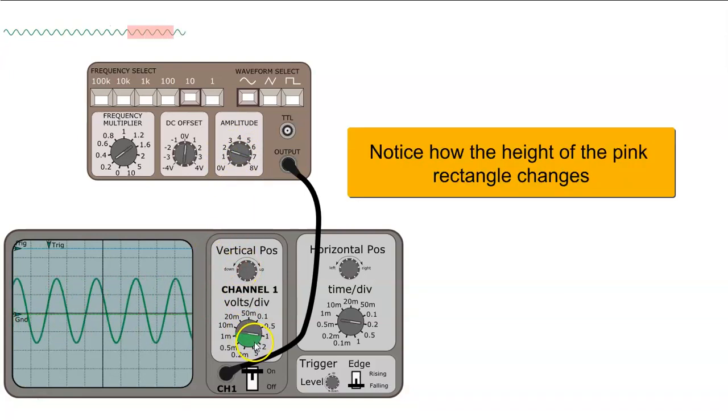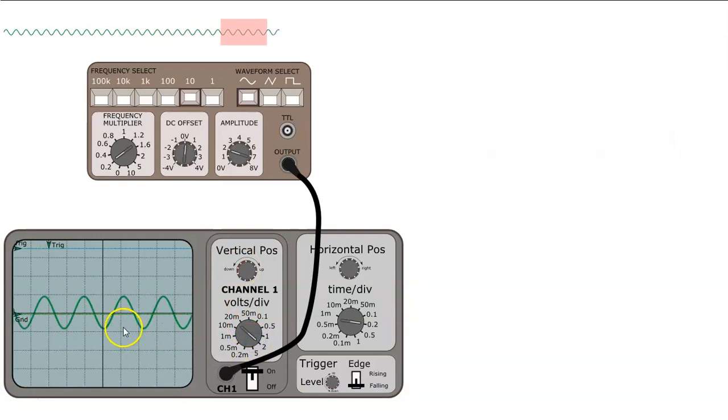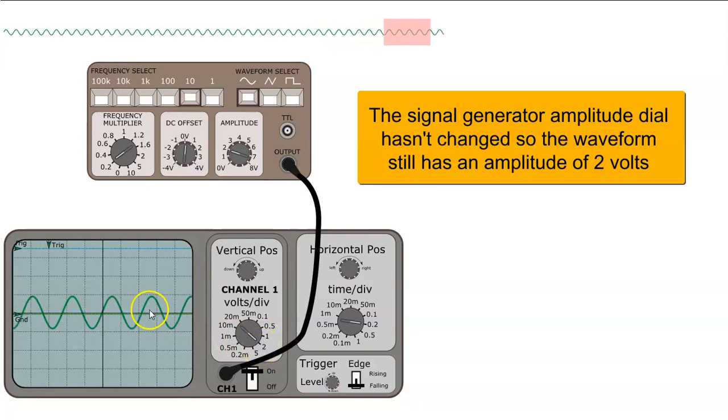If I change the number of volts per division it's like we're zooming out of the waveform. So we can see that the waveform now occupies one box but it's 2 volts per division so it's still a 2 volt waveform.